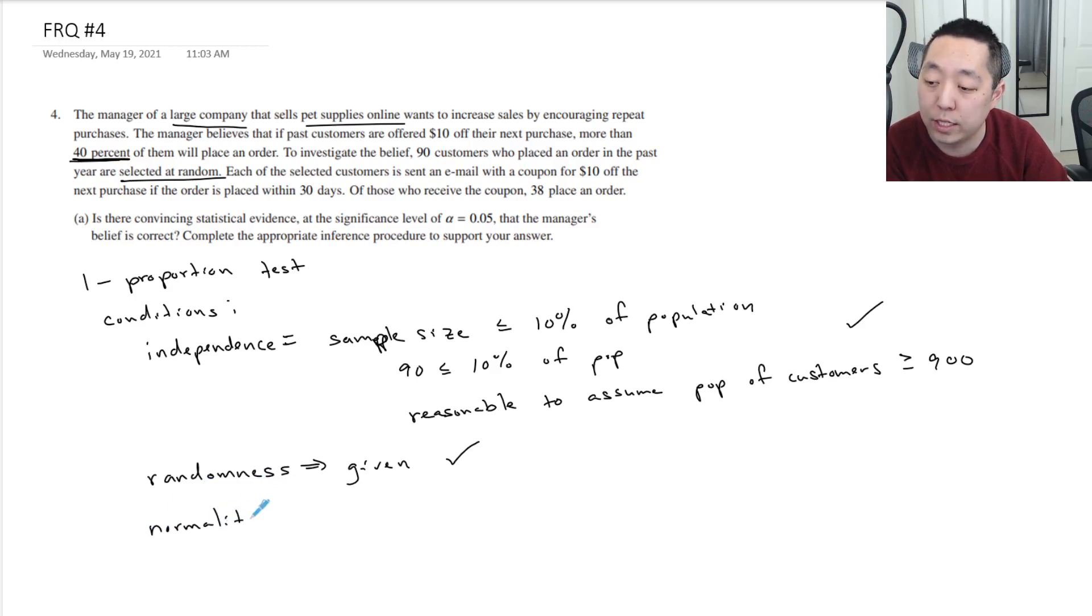The last is the normality condition. And for proportion test, the normality condition is, remember, we're approximating a binomial distribution, we're approximating as a normal distribution. And in order to do that, we need the number of successes and the number of failures to be greater than or equal to 10. It's kind of fuzzy on that exact number. I think in AP statistics, we use 10 as the threshold.